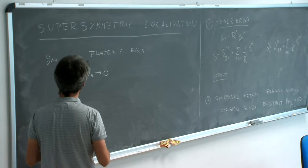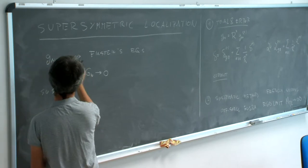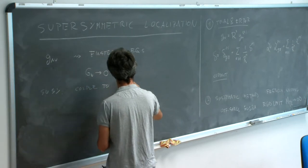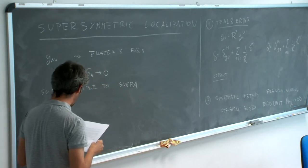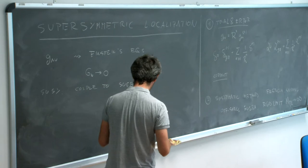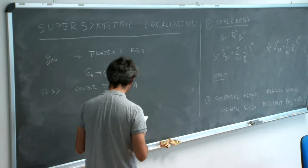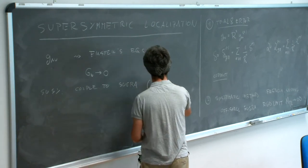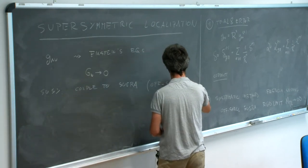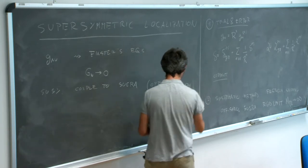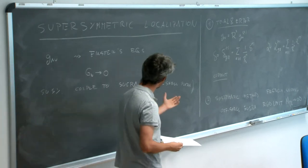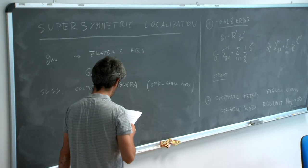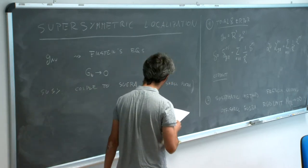Now let's consider supersymmetry. If we have supersymmetry, we don't just couple to gravity but to supergravity. And it turns out that, in order to make this method work, we should couple to off-shell supergravity. In off-shell supergravity, as Stefan's lecture discussed, there are extra auxiliary fields such that the supersymmetry algebra closes off-shell—without needing equations of motion.